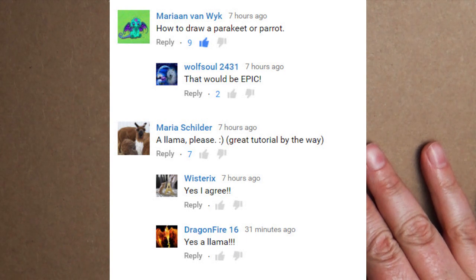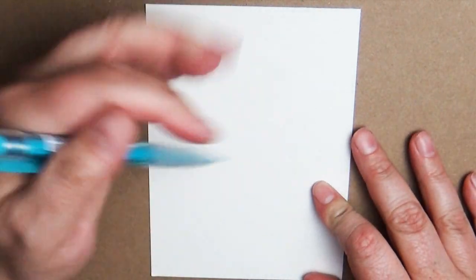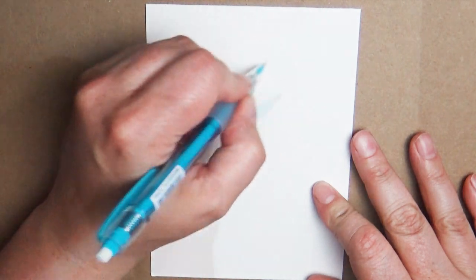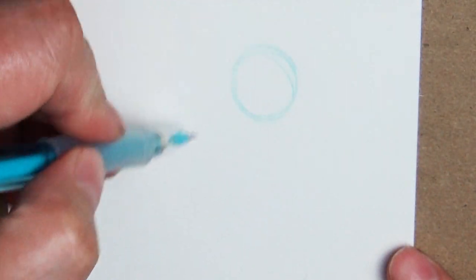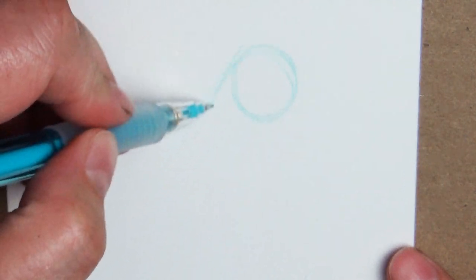Marianne asked for a tutorial on drawing a parakeet or parrot. First thing I'm going to do is begin to lay in my base shapes. This is going to help us build up the right proportions for the parakeet. I'm going to start with a circle for the head and then this kind of oval egg shape for the body. The shape is going to be a little bit wider at the top towards the head and then taper off towards the base of the bird.